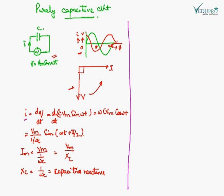For a purely capacitive circuit, current I is given by dQ by dt, the rate of change of charge. The charge here is C times VM sine omega t. Solving, the current comes out to be VM divided by 1 upon omega C, times sine of (omega t plus pi by 2). So current leads the voltage. The maximum current IM equals VM upon (1/omega C), where 1 upon omega C is XC, the reactance offered by the capacitance.